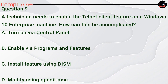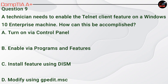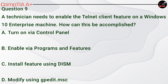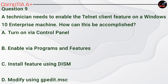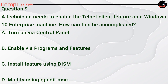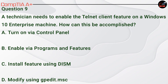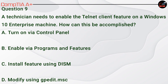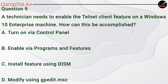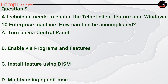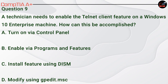Question 9. A technician needs to enable the Telnet Client feature on a Windows 10 Enterprise machine. How can this be accomplished? A. Turn on via Control Panel. B. Enable via Programs and Features. C. Install feature using DISM. D. Modify using gpedit.msc.